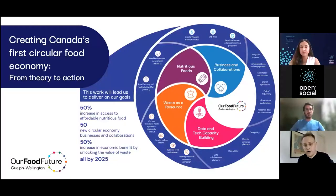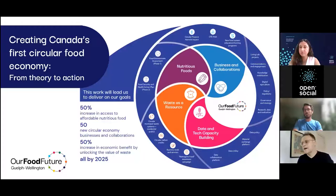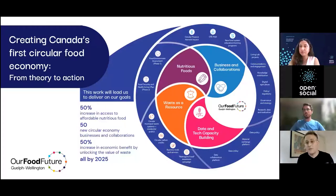Through this program, we got $10 million from our federal government. It was focused around three main goals: increasing access to affordable, nutritious food by 50%, focused on both food security and nutrition; starting 50 new circular economy businesses and collaborations; and creating a 50% increase in economic benefit where waste is being used as a resource. The circular economy is effectively trying to take end-of-use waste and make it an economic feedstock in another economic process — reducing food waste while increasing social, economic, and environmental value along the supply chain.